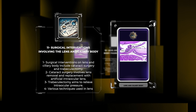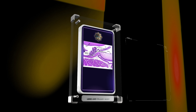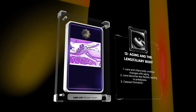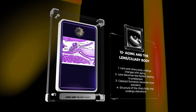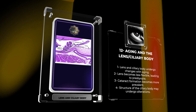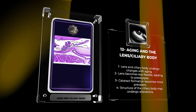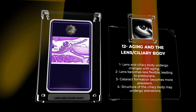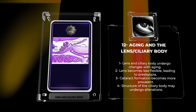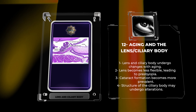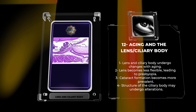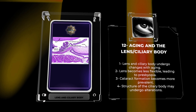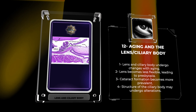The ciliary body receives its blood supply from the major arterial circle of the iris, located in the posterior chamber of the eye. The ciliary body vasculature primarily consists of radial arterioles, which branch into a network of fenestrated capillaries within the ciliary processes. These capillaries drain into venules, forming the ciliary venous plexus, ultimately leading to venous drainage.